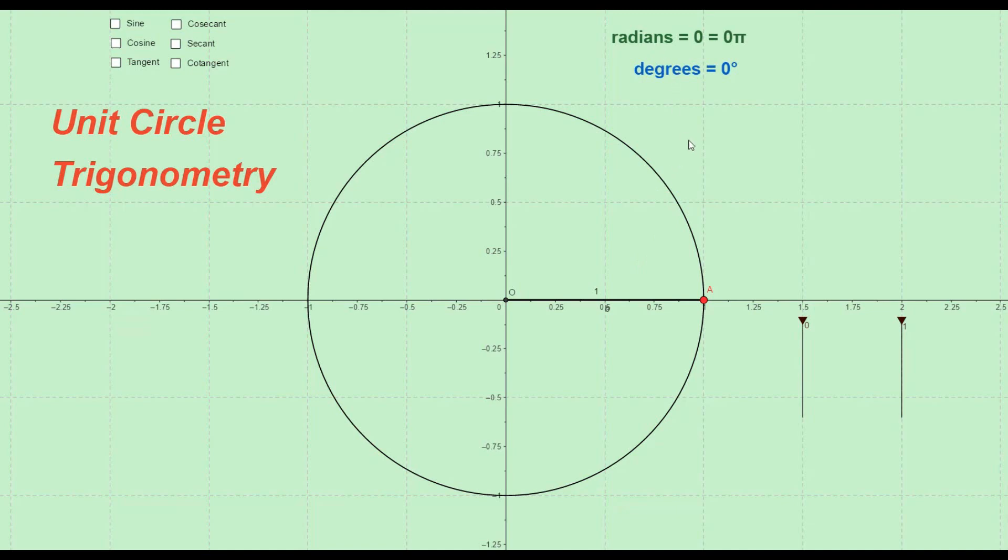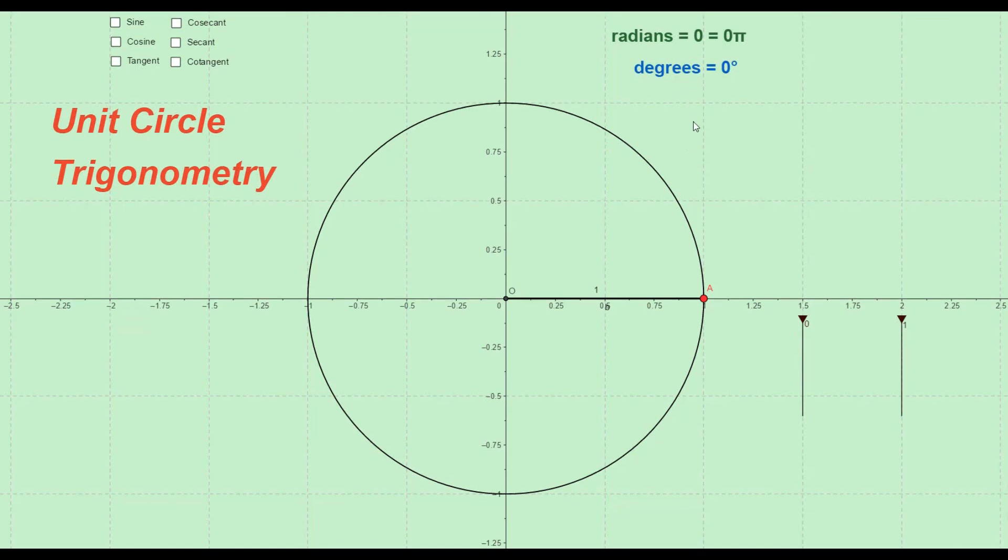I'll tell you why we need to know another unit of angle if we already have degrees in some other video, but right now just take it as an important thing to know. Any angle in radians is basically the ratio of the arc of the circle it subtends and the radius of the circle. So in a unit circle, angle in radians is just same as the length of arc because the radius is 1.